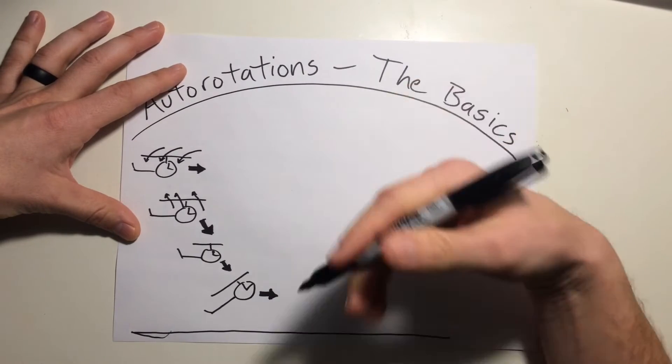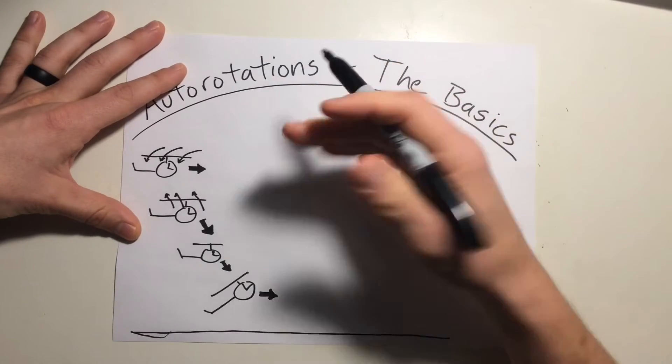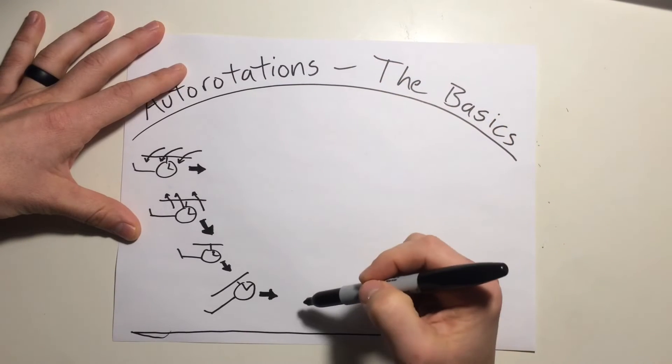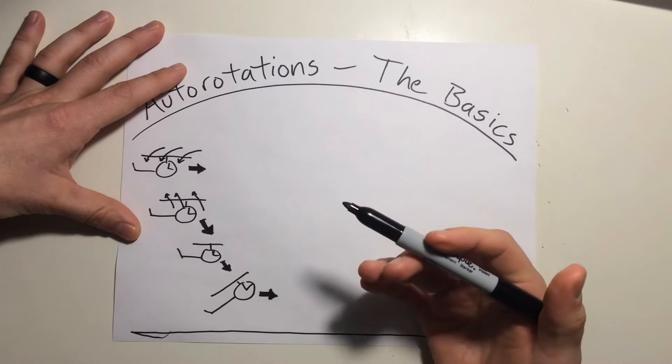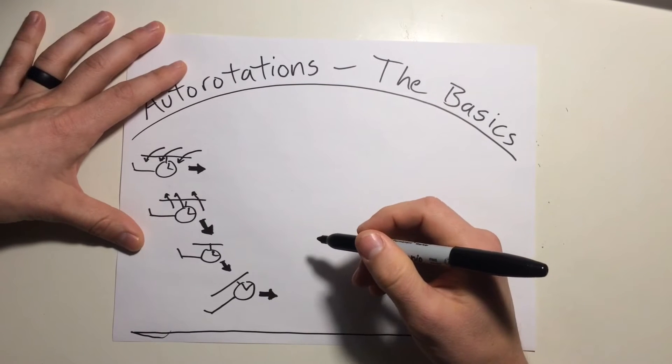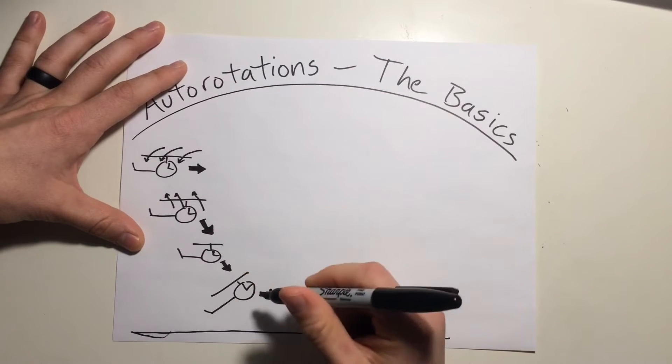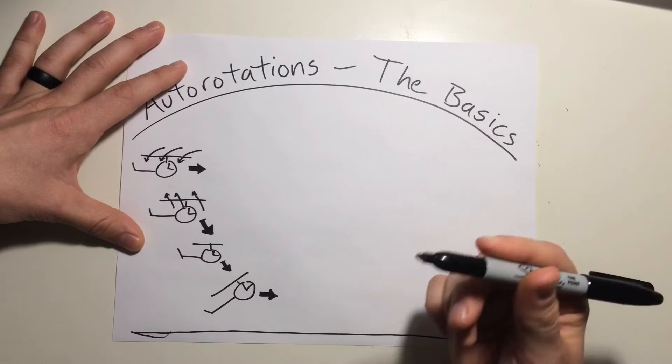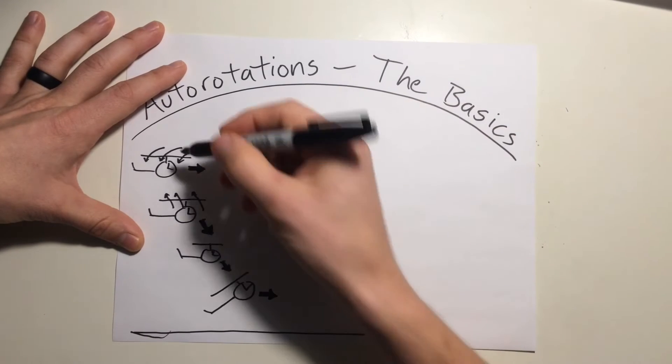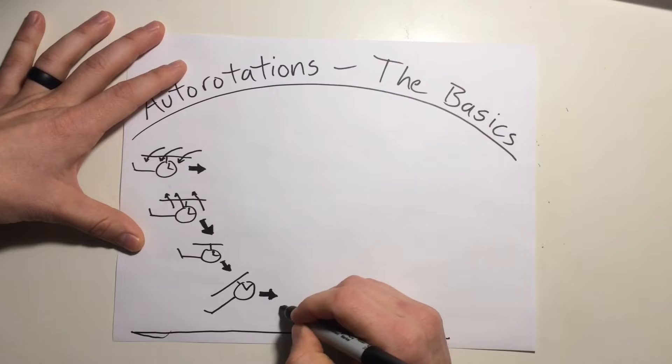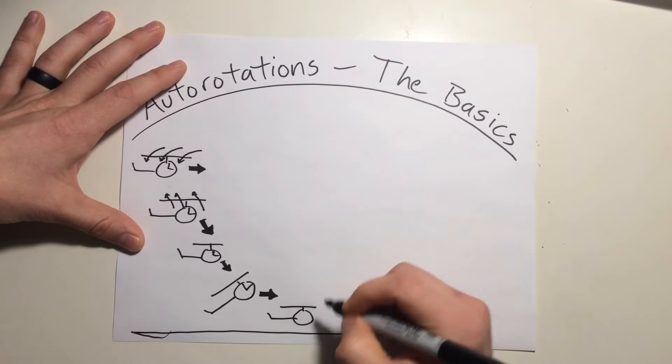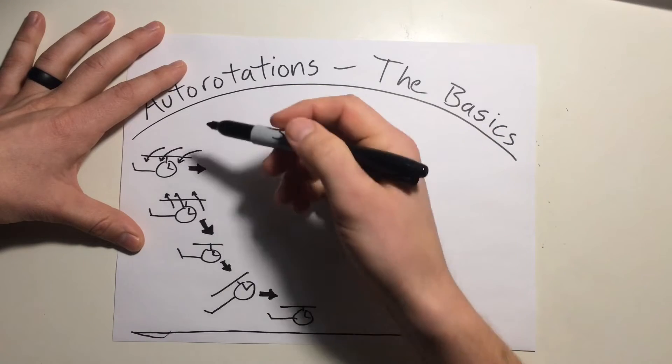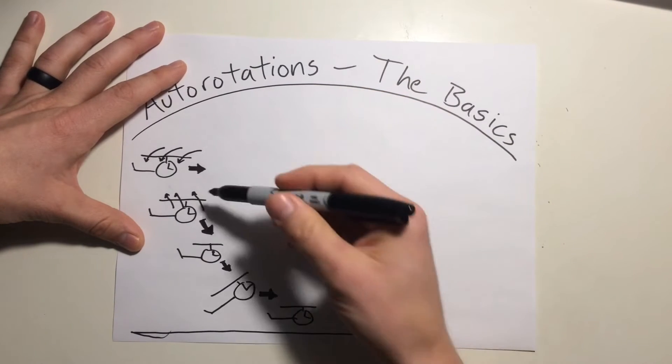And we don't always get to pick where our engine fails, so in a lot of cases, we're having to execute this maneuver to, say, an open field or an unimproved area, so we want to reduce a lot of that forward motion prior to touching the ground so that we don't have any kind of rolling motion once we're on the ground. Now, as the helicopter begins to settle at the end of this flare, the pilot is going to cushion with a collective application as the helicopter touches down. So when executed correctly, this whole maneuver looks like the helicopter touching down with relatively zero forward airspeed, a relatively low rate of descent, and you've turned an engine failure at altitude into a safe touchdown instead of a crash sequence.